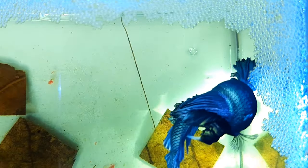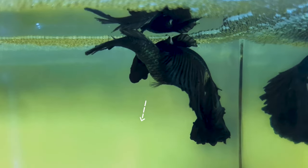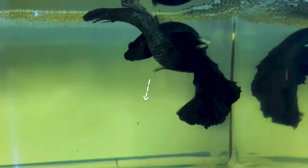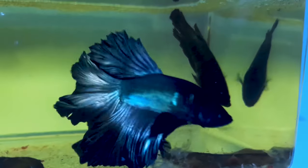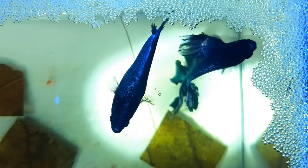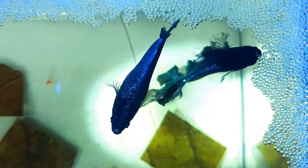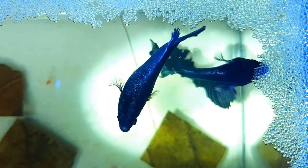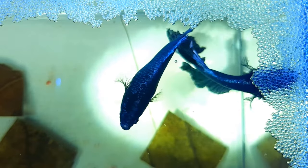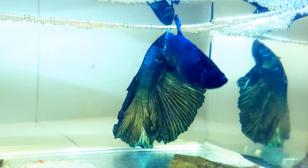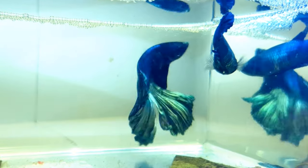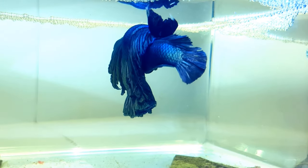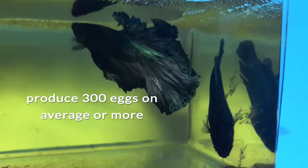Until the male is able to flip the female upside down and squeeze her. When successful, eggs will fall down. The male will catch the eggs and put them in the bubble nest. They will do several embraces until they have fertilized hundreds of eggs. A mature female betta can produce 300 eggs on average or more.